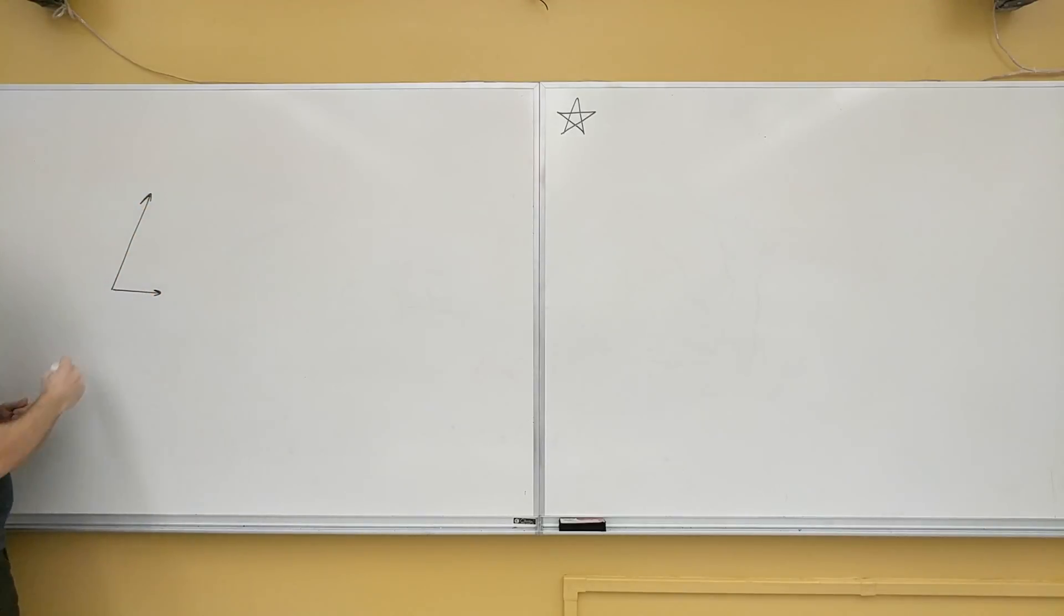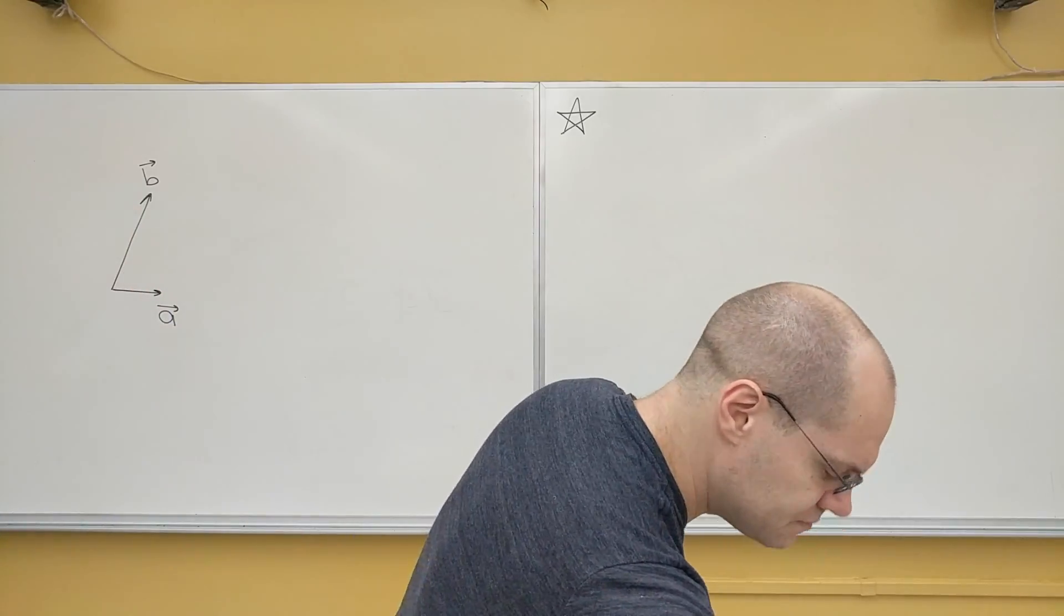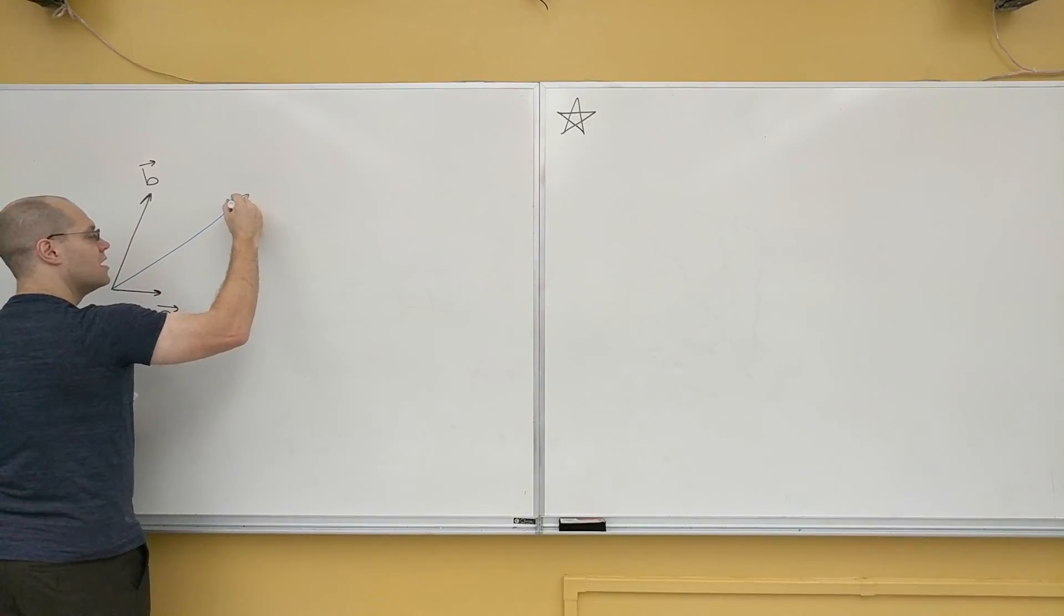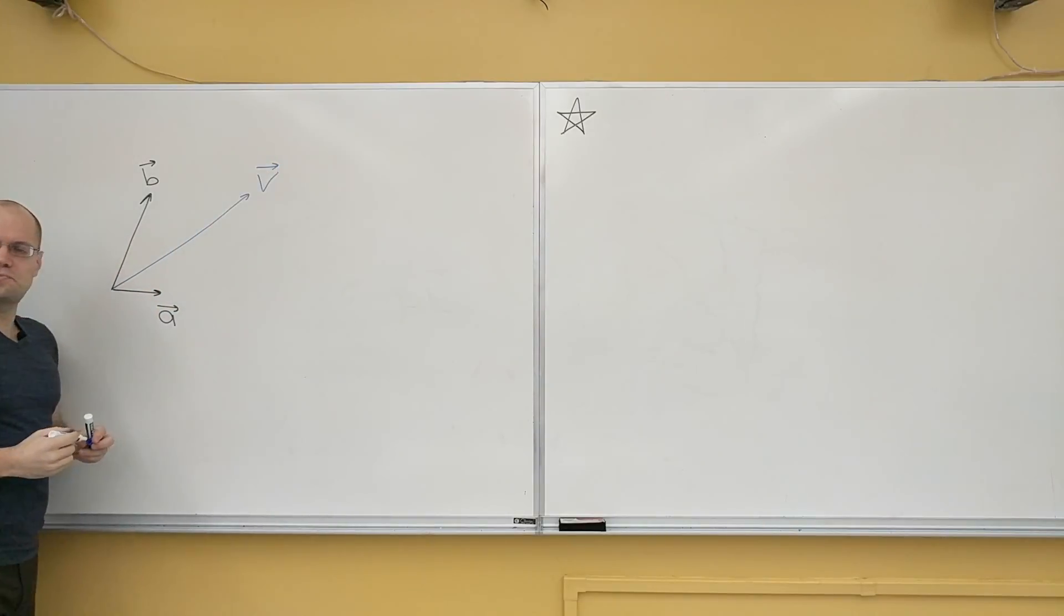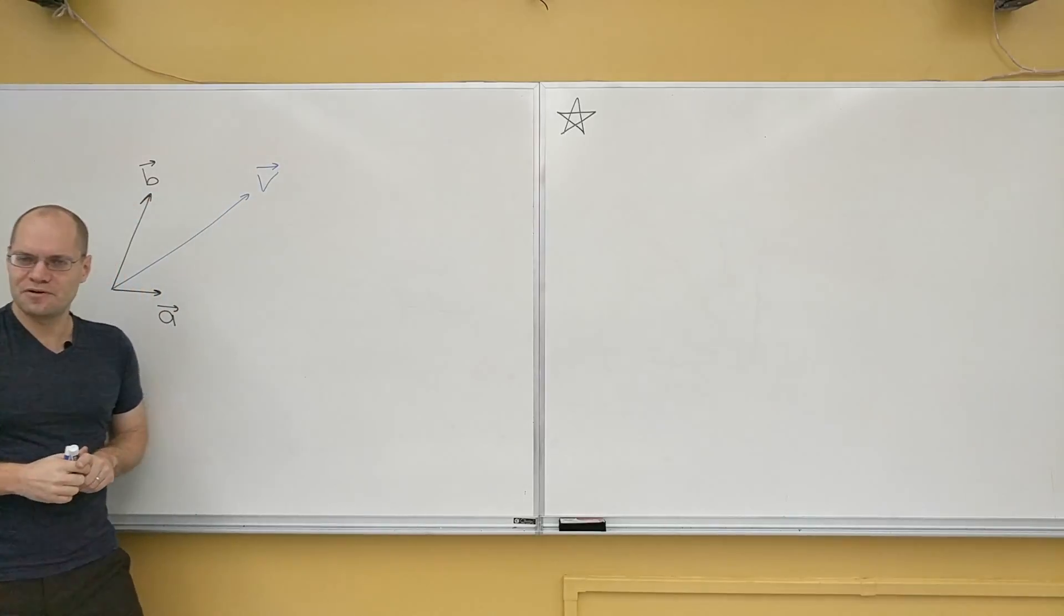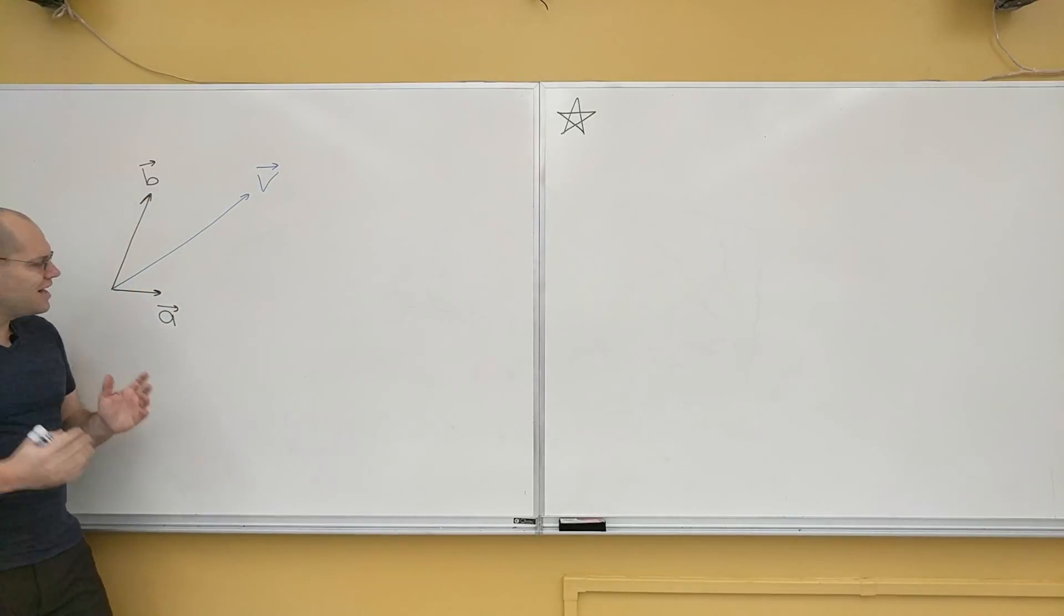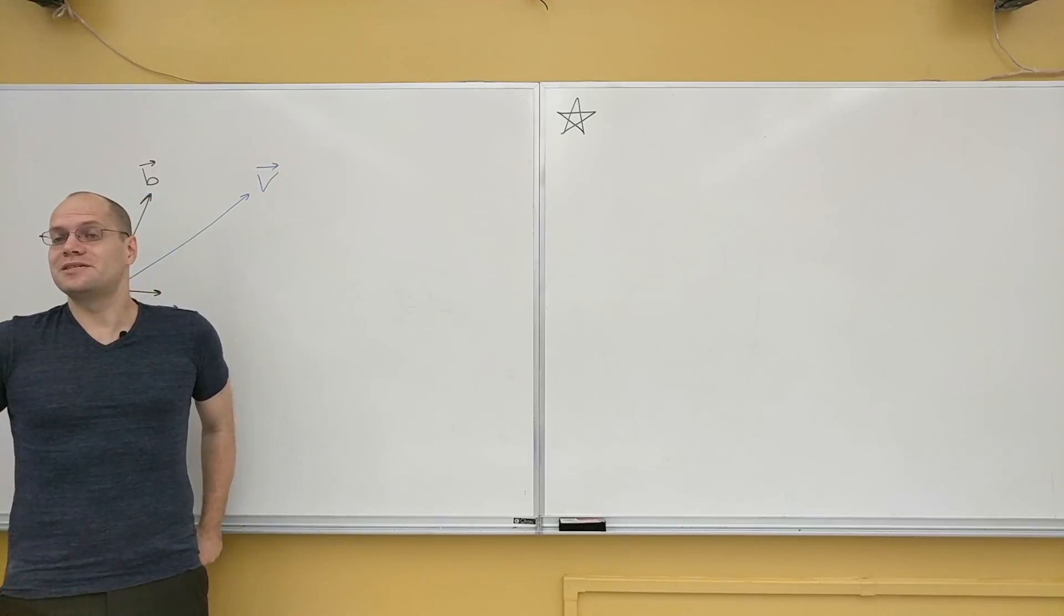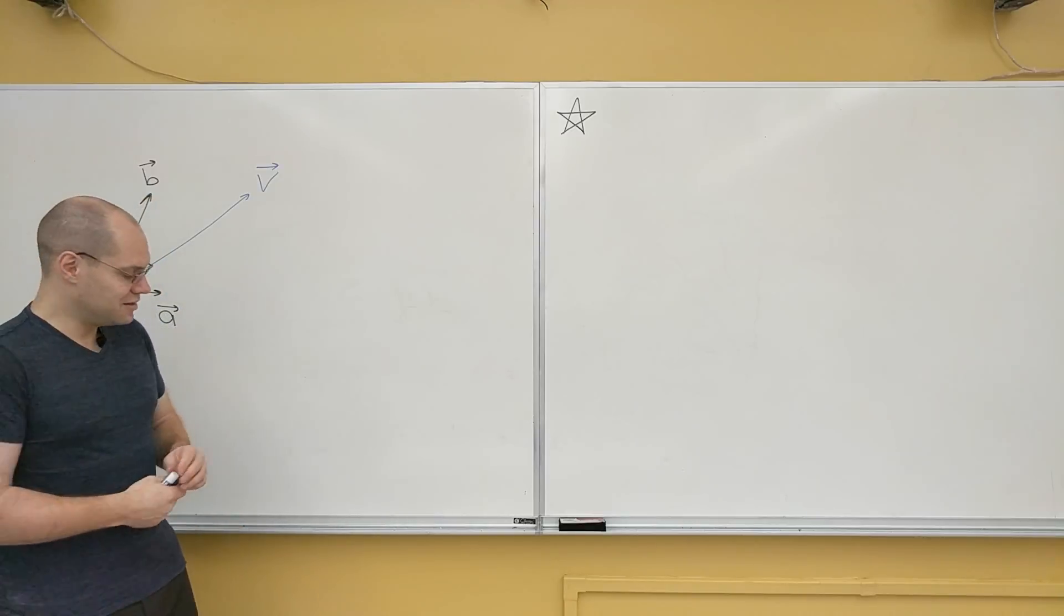So right now I'll draw them as not orthogonal. Let's call this one a and let's call this one B. And there was a third vector V, and we wanted to decompose it with respect to a and B, but we wanted to do it with the help of the dot product, not with the help of geometric constructions, but simply by evaluating dot products and then doing whatever arithmetic was necessary with the numbers that we got.